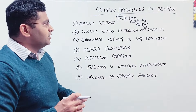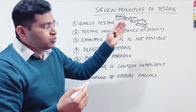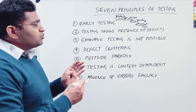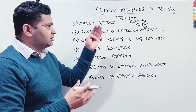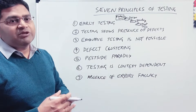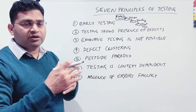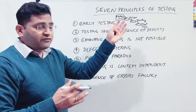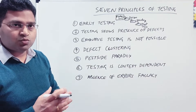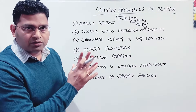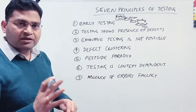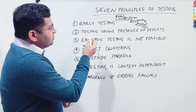That was the problem with the waterfall approach — testing came after multiple phases were completed. Development approaches have evolved, and agile or scrum is the latest, where you have shorter iterations. You test in every cycle and in all phases. There will be requirements and design in shorter iterations as well, but testing is involved in all phases of the software development life cycle. That's the first principle: start testing as early as possible.